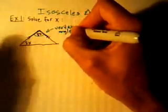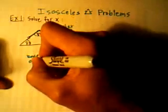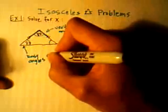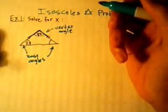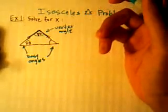And if this is the vertex angle, we remember that these other two angles here in the corners, these must be what we call base angles. And in an isosceles triangle, base angles are congruent. That's going to be the most important key to helping us start this problem here.